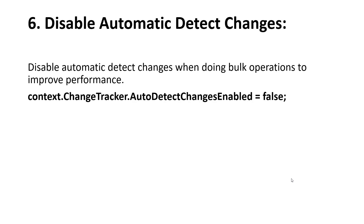The fifth tip is optimizing indexing. Proper indexing is crucial for query performance. Analyze your queries and ensure that the columns used in joins, WHERE clauses, and ORDER BY clauses are indexed.